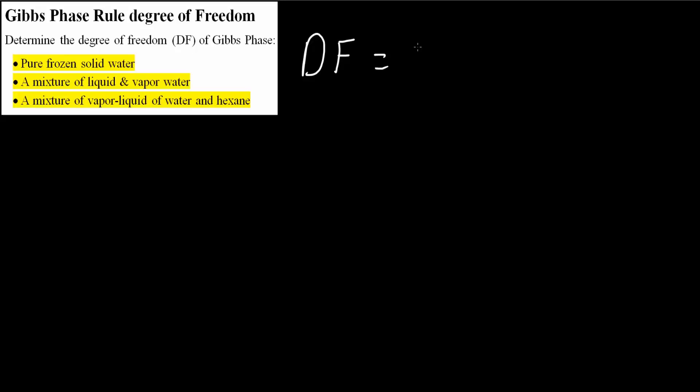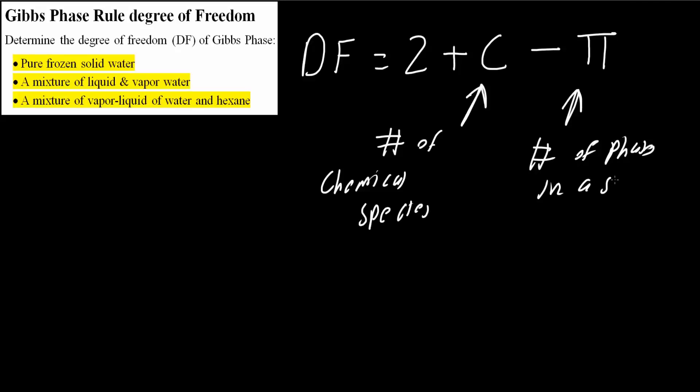The Gibbs phase rule formula is DF = 2 + C - π. C represents the number of chemical species, and π represents the number of phases in a system at equilibrium. Let's solve these three problems.